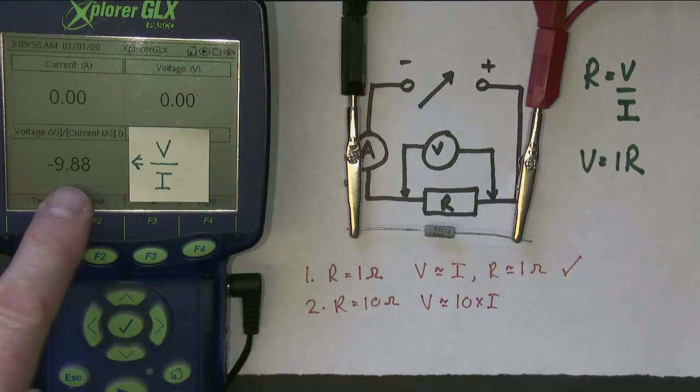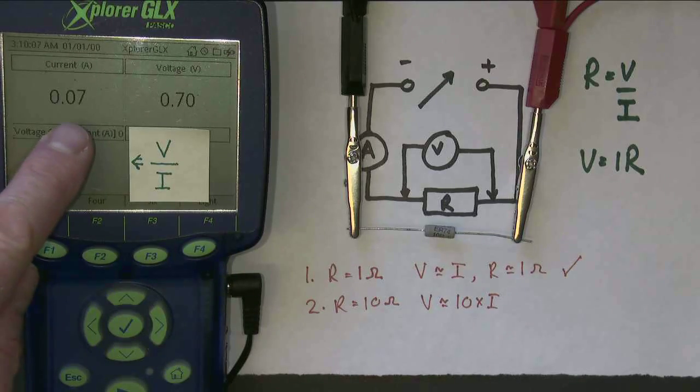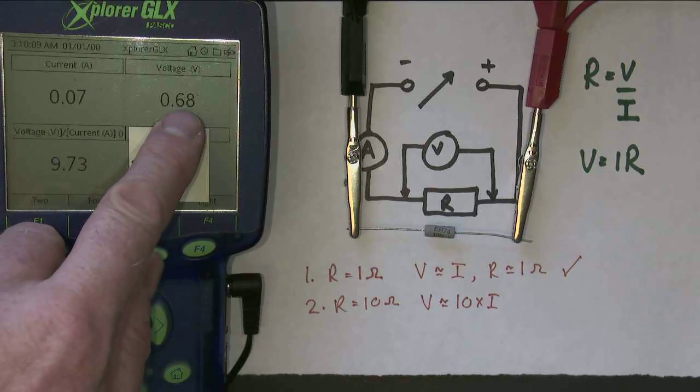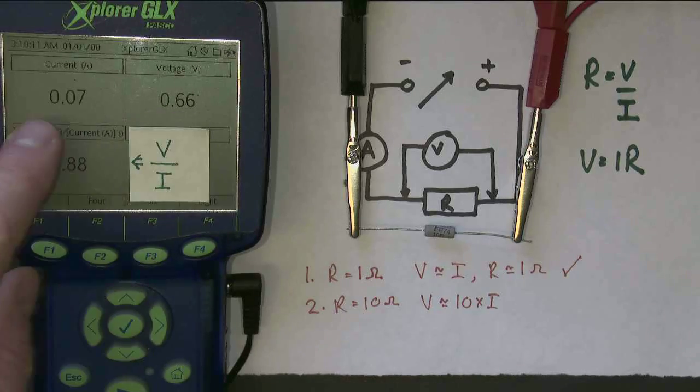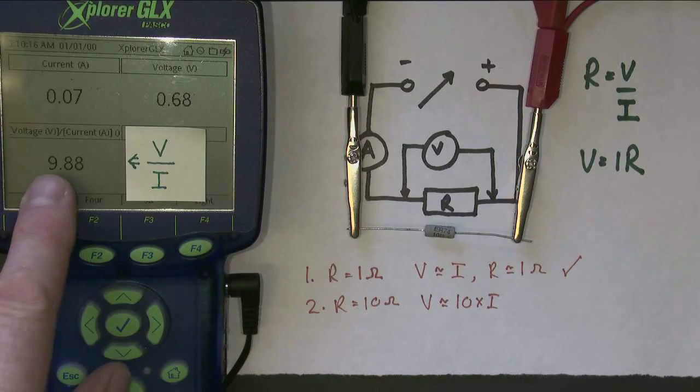I randomly stopped it here and it came out to be minus 10. That's just a fluctuation of the data logger, forget that. Let's press play. What we find here is that when the current is 0.07, the voltage is 0.7. It's approximately 10 times different, and the resistance, the V over I, is approximately 10.